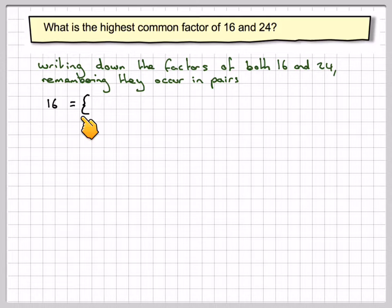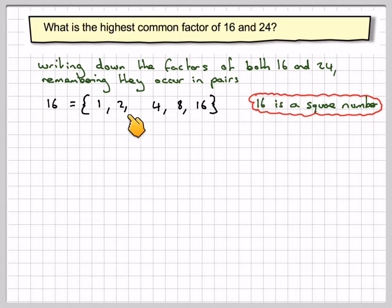So we've got 16. The factors are 1 and 16, 2 and 8, and then 4. 4 times 4 is 16. Remember, this has an odd number of factors because 16 is a square number.